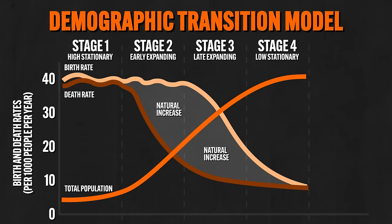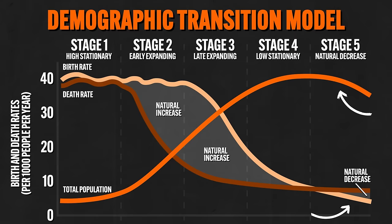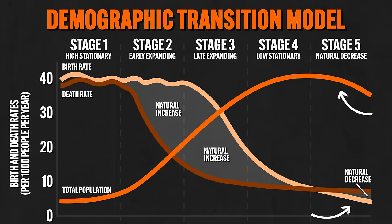When the DTM was first introduced it only had four stages, but recently a potential fifth stage has been added: the natural decrease stage. In every prior stage, populations were either stable or growing, but here the death rate exceeds the birth rate and the rate of natural increase begins to decline. Some European countries and Japan are now in this stage. However, the populations of these countries might still grow through migration.